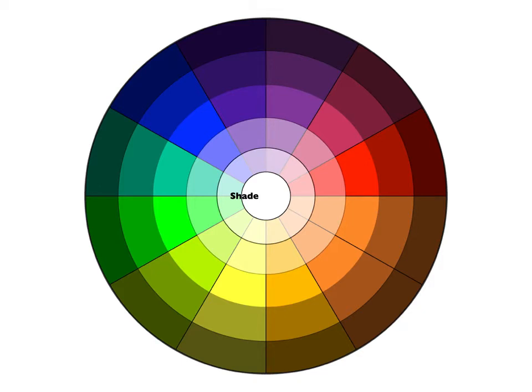We're also going to have a shade of each hue. A hue plus black is what is called a shade. So you will also have a circle on your color wheel that is reserved for shade.